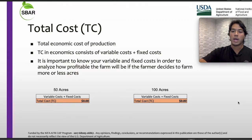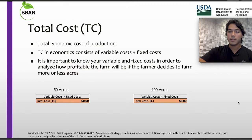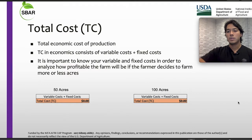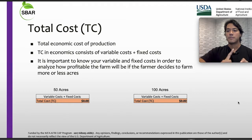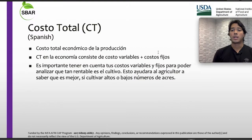The farmer will have the option to farm less crops or more. We will see the impact on the variable cost of increasing or decreasing production, and also the impacts on the fixed cost when you increase or decrease your production.